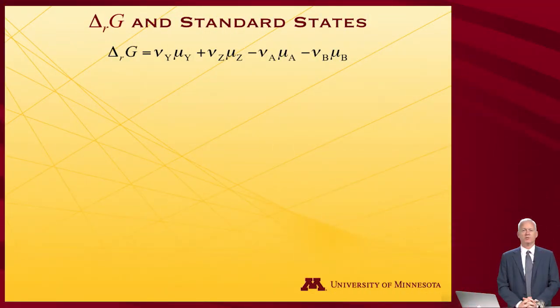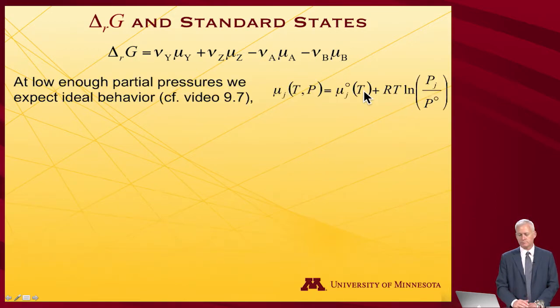This was the result of a derivation we did in the last video, namely that the free energy of reaction is equal to stoichiometry coefficients times chemical potentials of products minus stoichiometry coefficients times chemical potentials of reactants. Now let's expand these chemical potentials to something we can work with.